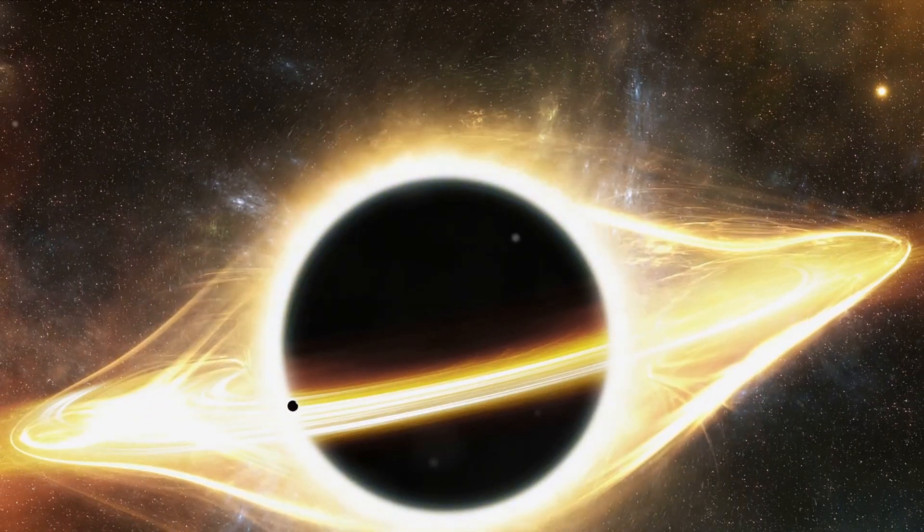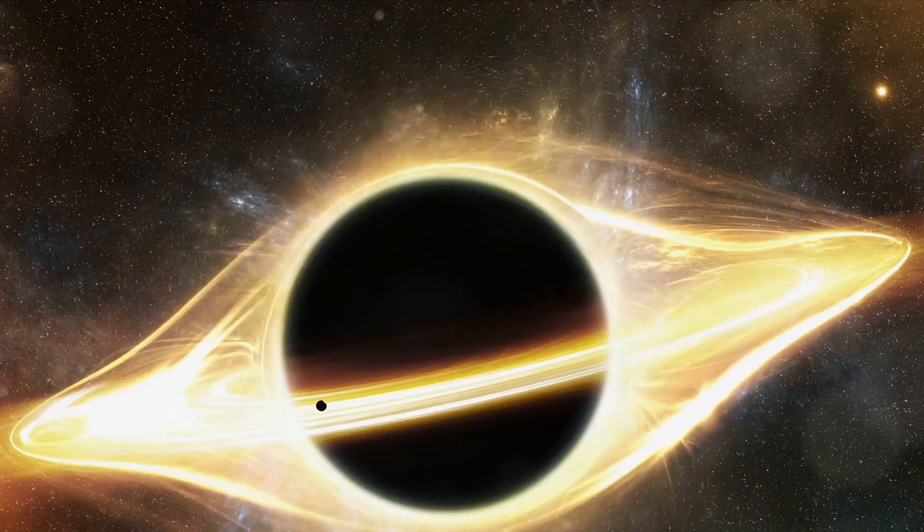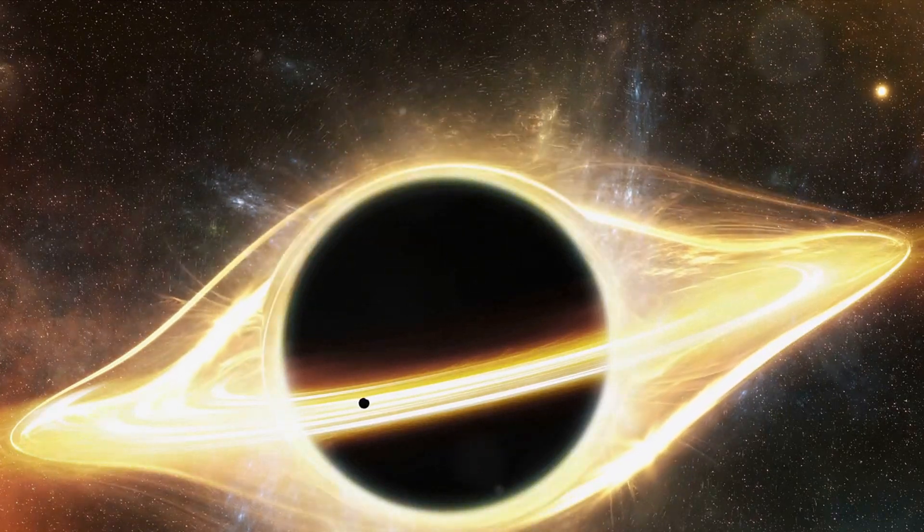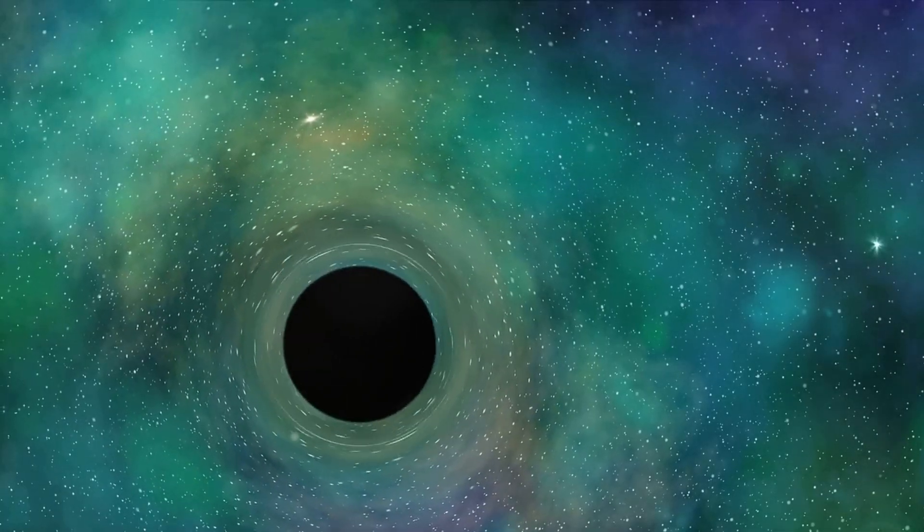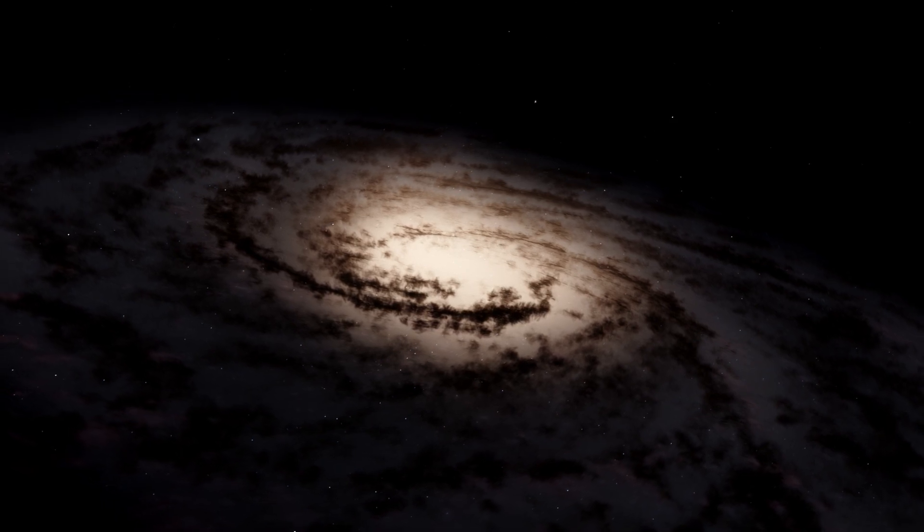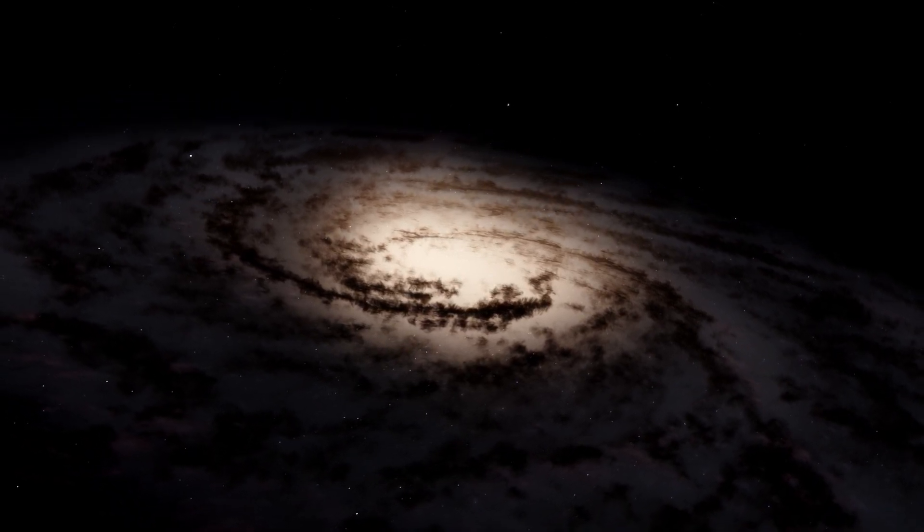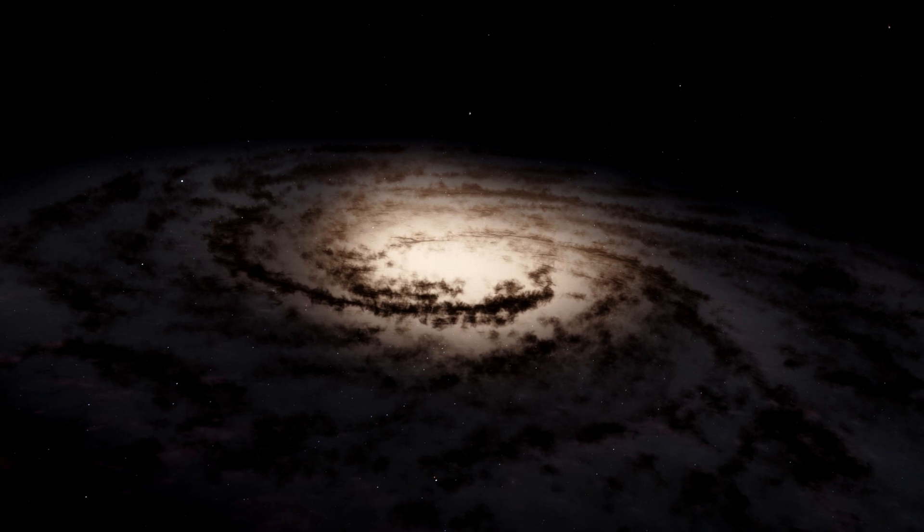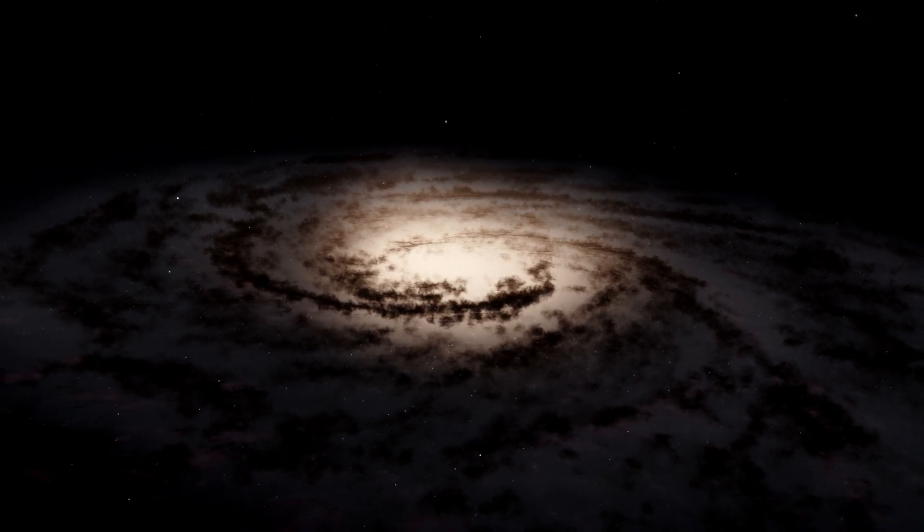Even from a distance, a black hole could wreak havoc. Its powerful gravity could pull on the Earth, causing catastrophic tidal forces that would result in enormous tsunamis and earthquakes. The climate would be thrown into chaos, and life as we know it would cease to exist. But it's not just our planet that's at risk.